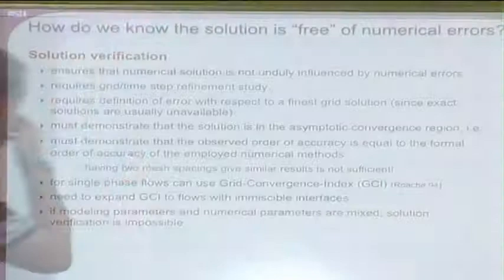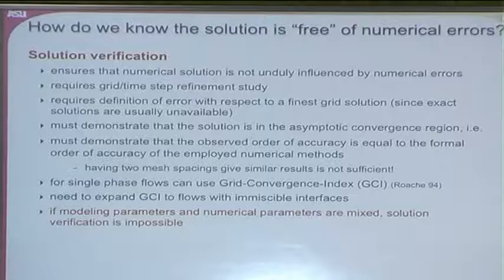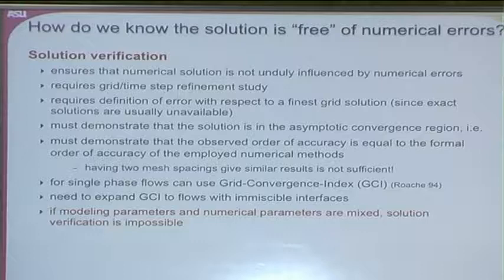So that's code verification. Let's say we've run through this and found all order-of-accuracy errors in our code. Then solution verification: we have to ensure the numerical solution we find is not unduly influenced by numerical errors. Would the answer change if we refined our mesh? That really requires a grid and time step refinement study, and first it requires the definition of an error. But if we don't have an analytical solution, what's our error?